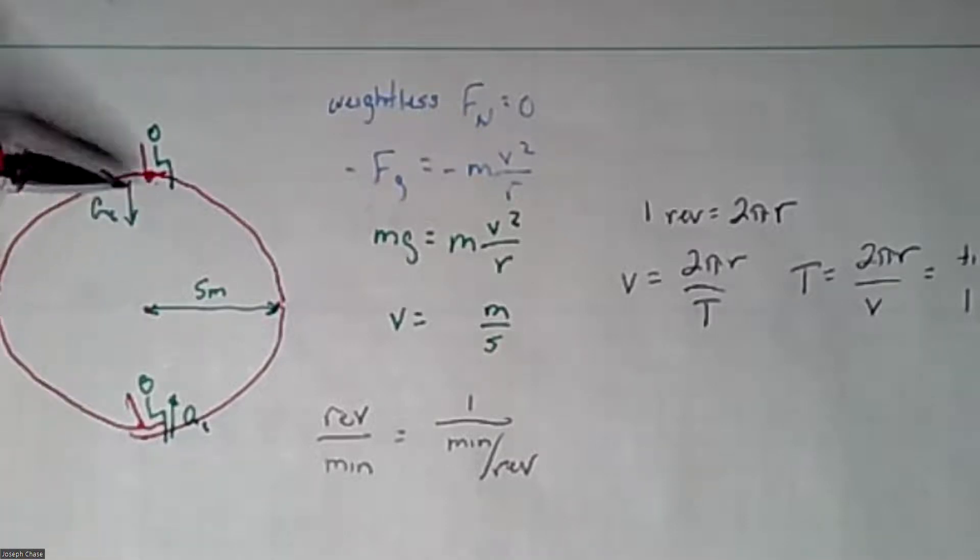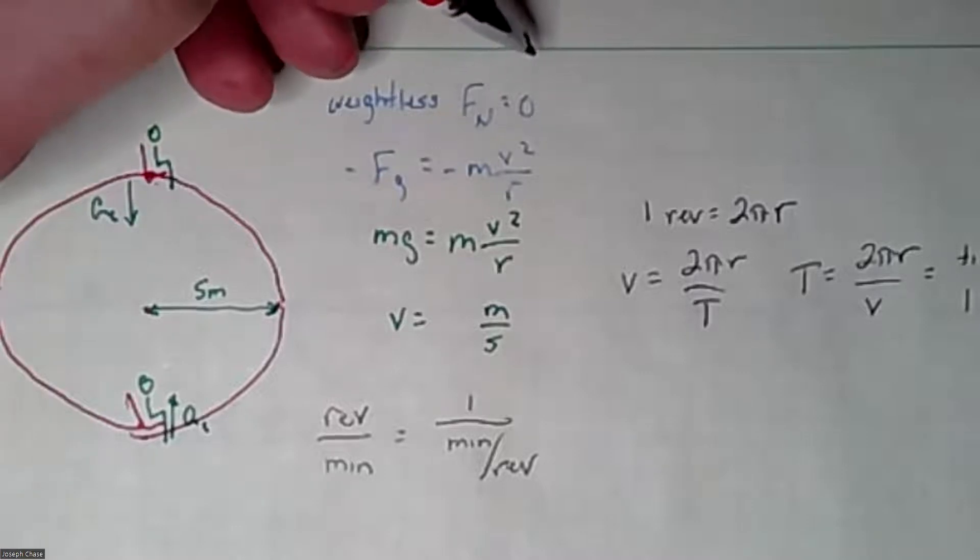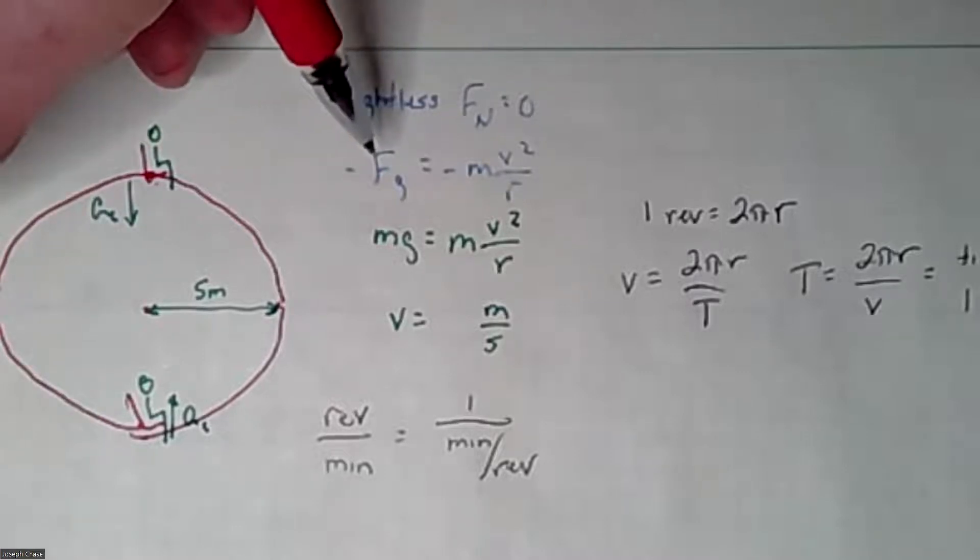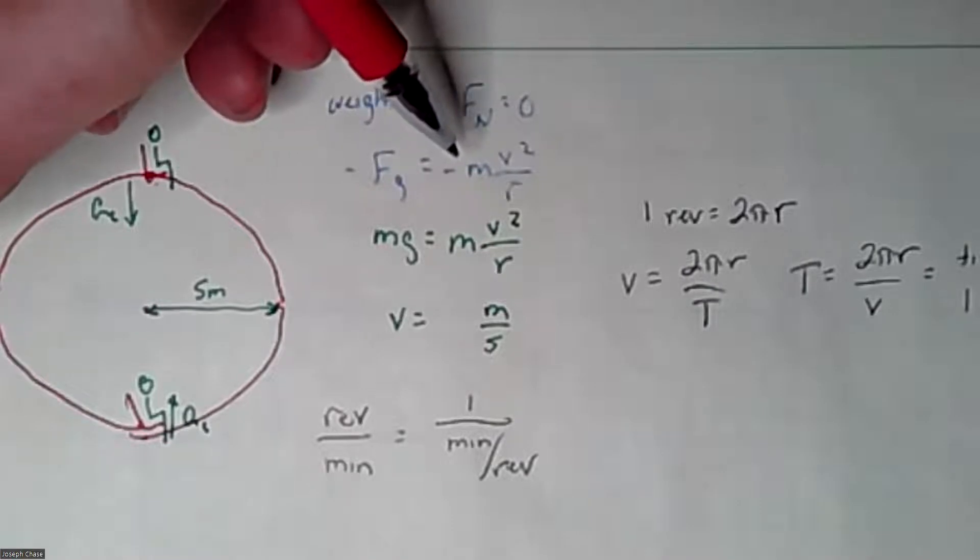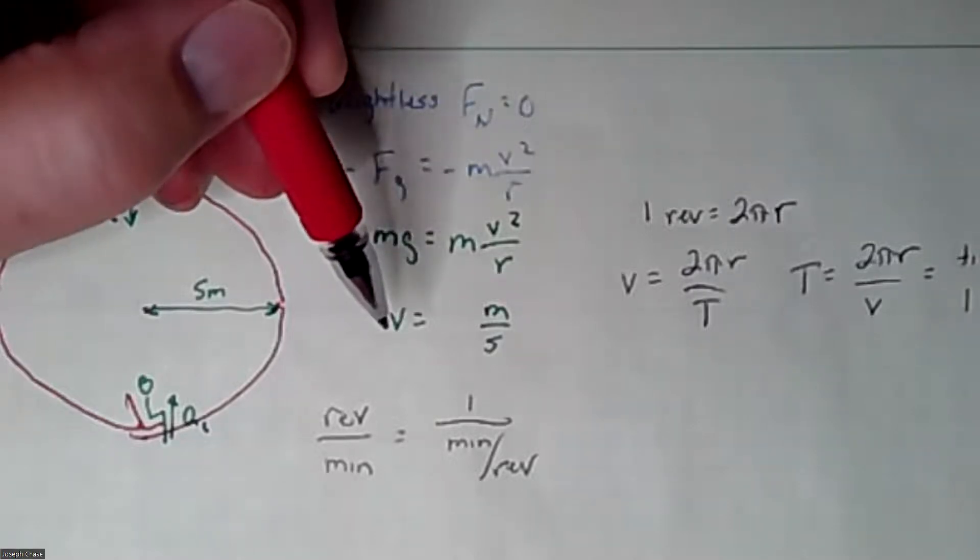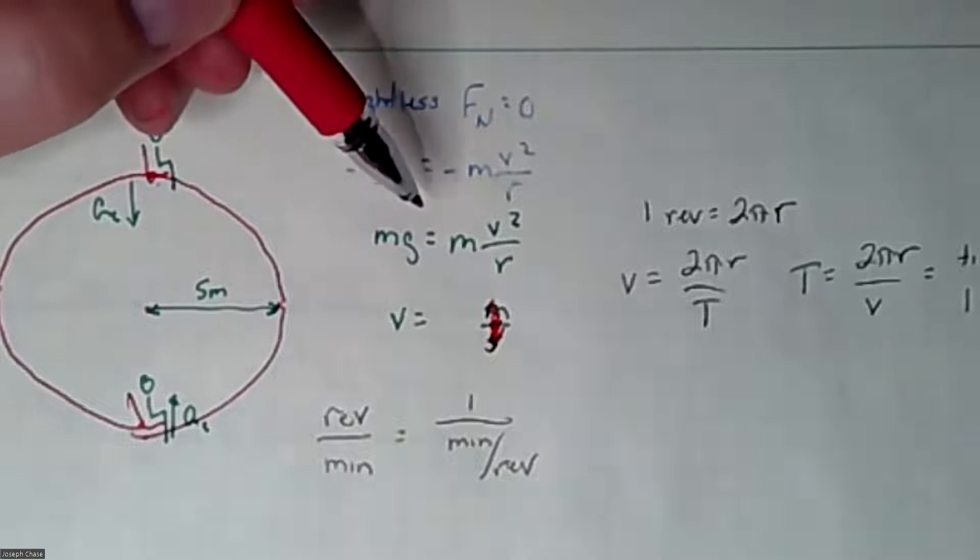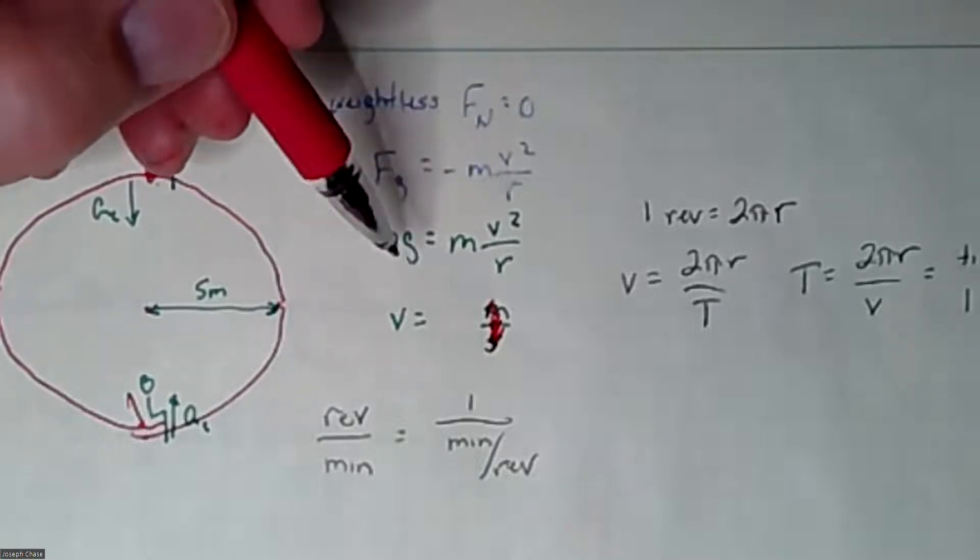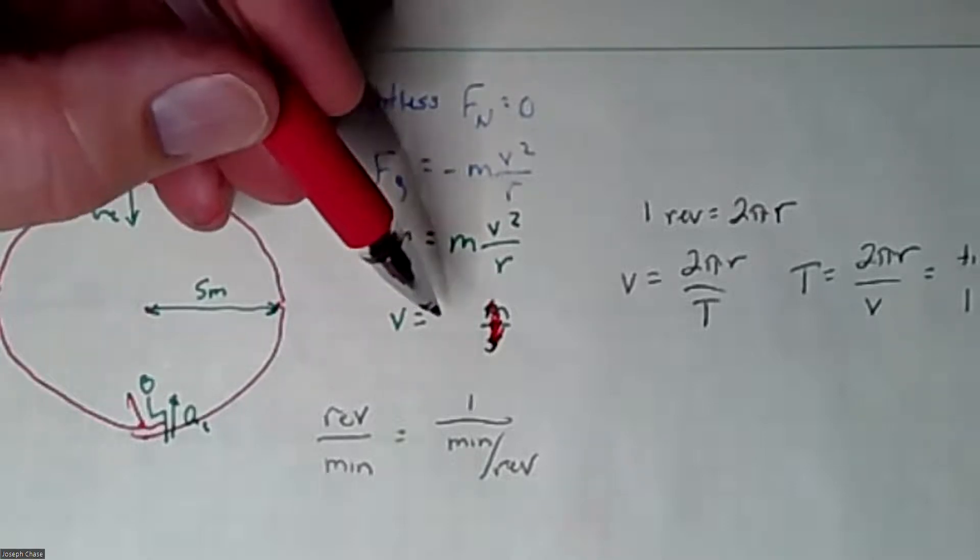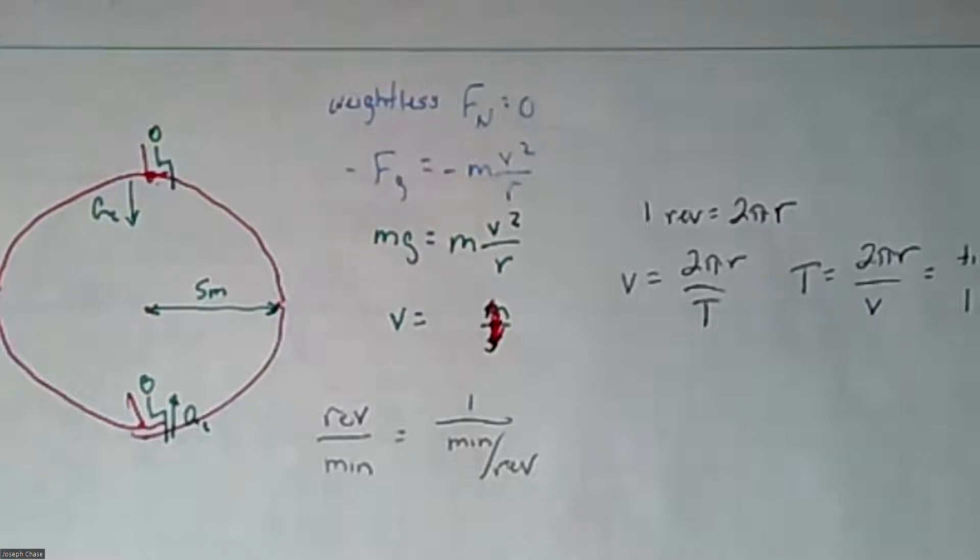And the condition for being weightless up at the top is that the normal force is equal to zero, so that gravity, the downward force, is exactly enough to provide the downward centripetal force needed to keep them in a circle. And of course, minus signs cancel out, a lot of cancellation, you should be able to get, this is a little confusing, this is supposed to be units, not M over S. But if you solve this for V, you get a pretty typical equation that I've highlighted many times.